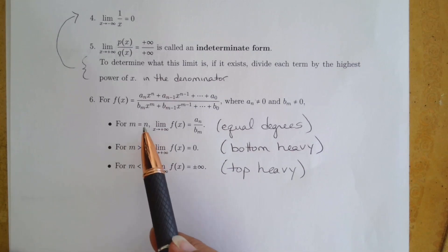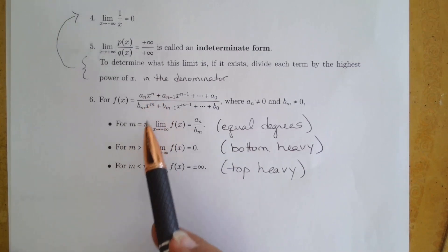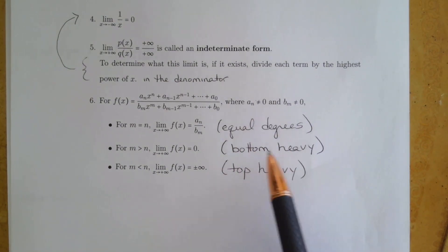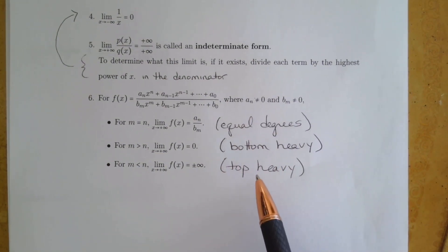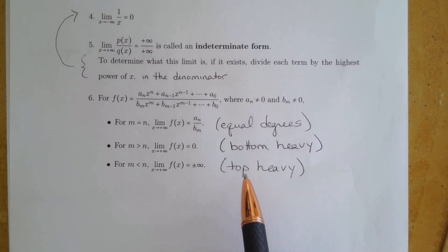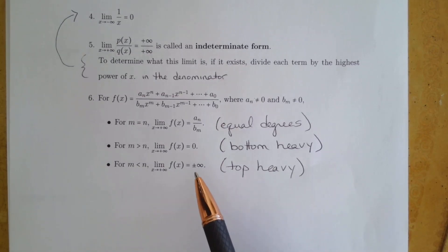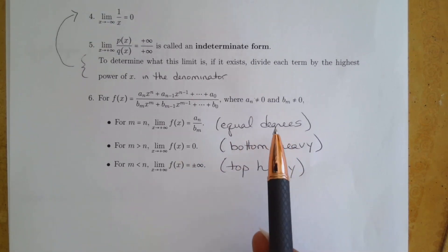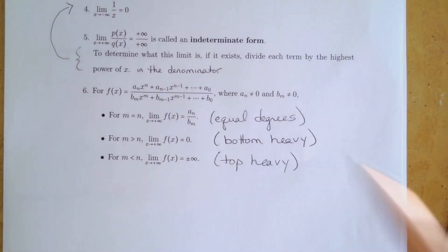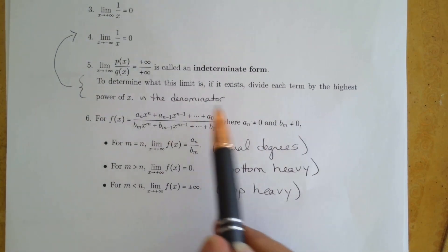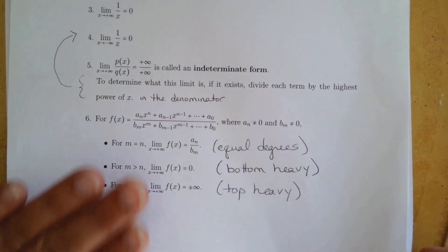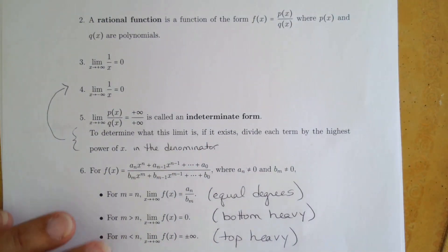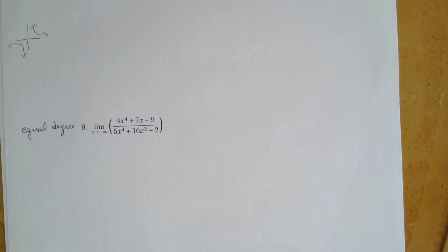I like those terms better than m and n, because some of you get confused about which is which. So when I look at a rational function, it's either going to have equal degrees, the bottom degree bigger, or the top degree bigger. If it's top heavy, my answer is either plus or minus infinity. If it's bottom heavy, my answer is zero — I don't have to do anything. And if the degrees are equal, I take the ratio of the leading coefficients. We're going to work through these today so you can see where the rules come from.